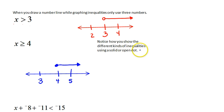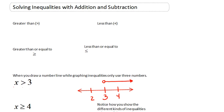Notice how you show the different kinds of inequalities using a solid or an open dot. So if we look back at our symbols for inequalities, greater than would use an open circle, less than would use an open circle, less than or equal to would be a solid dot, and greater than or equal to would be a solid dot.